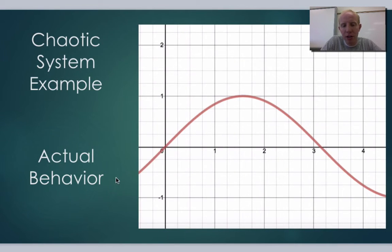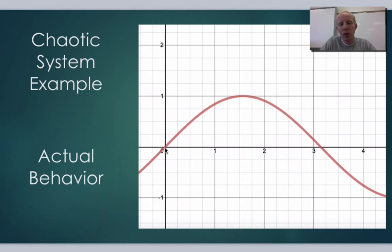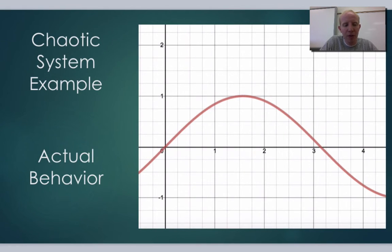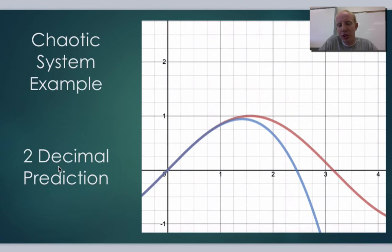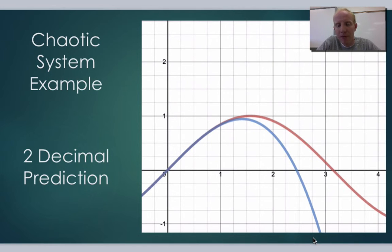Let's say our initial prediction is accurate to two decimal places — so instead of exactly zero, we say 0.01, meaning we're off at the second decimal place. If we put that in the computer, it would predict the behavior for a short amount of time, but then eventually it starts to break off and doesn't approximate the answer very well.